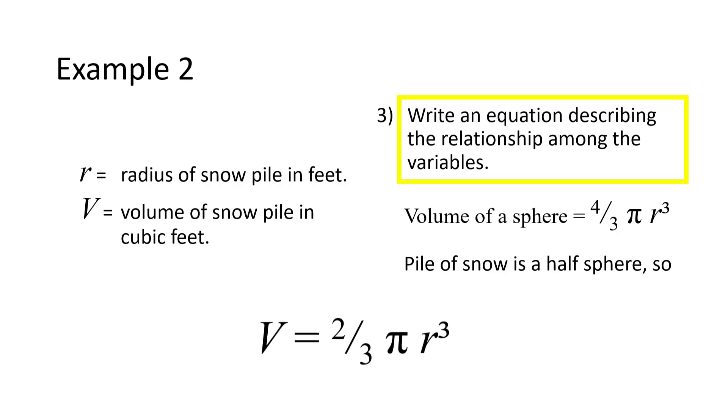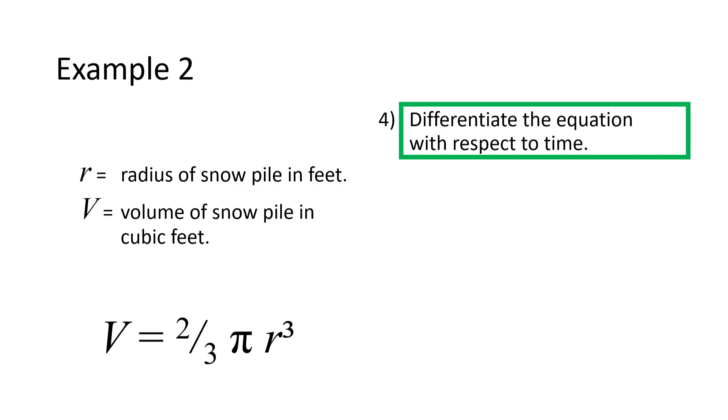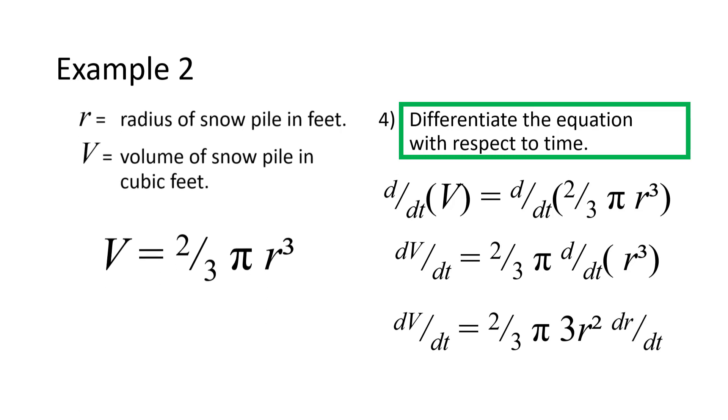I'll keep some key information on the left and move to the next step, differentiating both sides of the equation with respect to time. This requires implicit differentiation, which is an application of the chain rule. We treat V and r as functions of t. When we differentiate r cubed, we get 3r squared, but then we have to multiply that by the derivative of the quantity inside the cube. That gives us 3r squared times dr/dt.